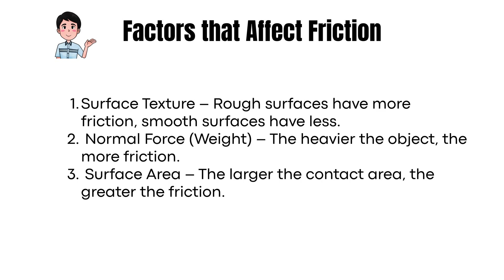Three — surface area: the larger the contact area, the greater the friction. So a basketball on a polished floor has less friction, but on rough pavement, much more.